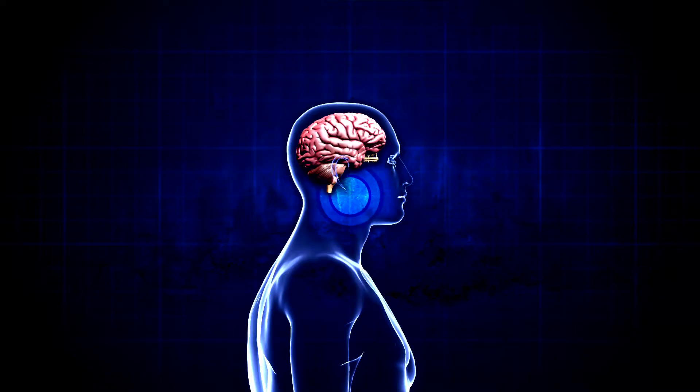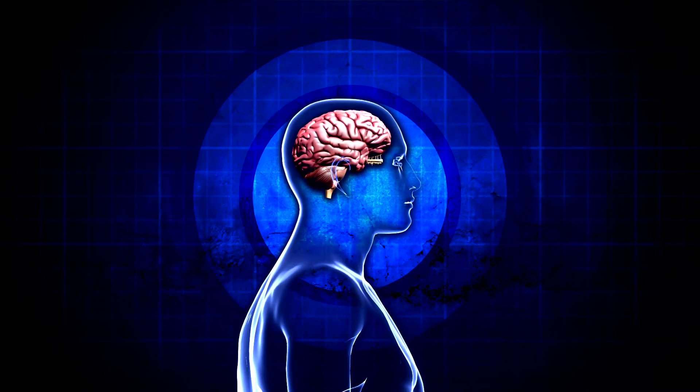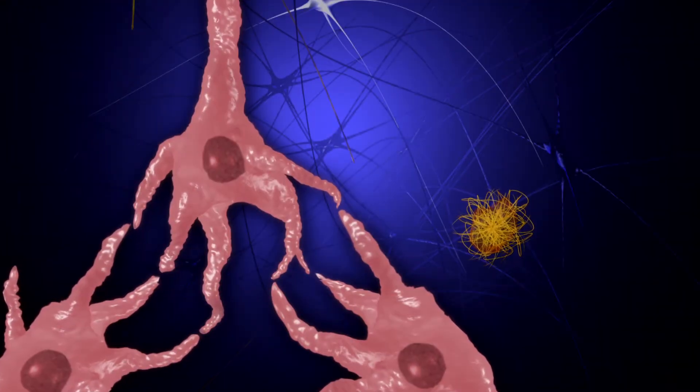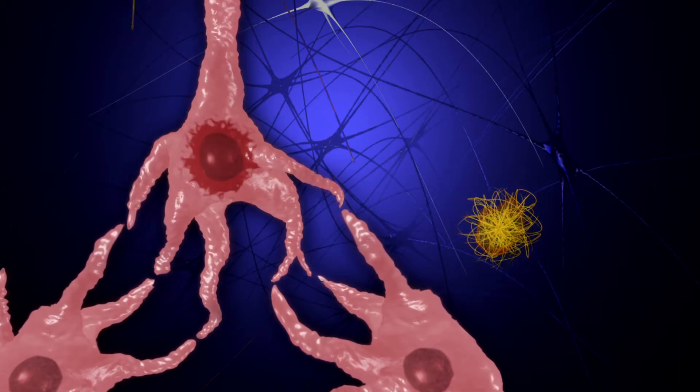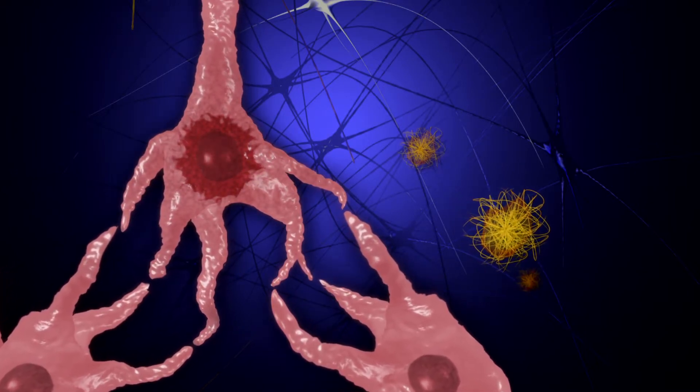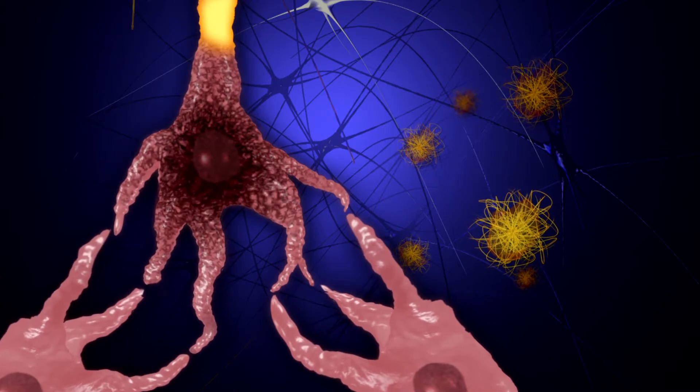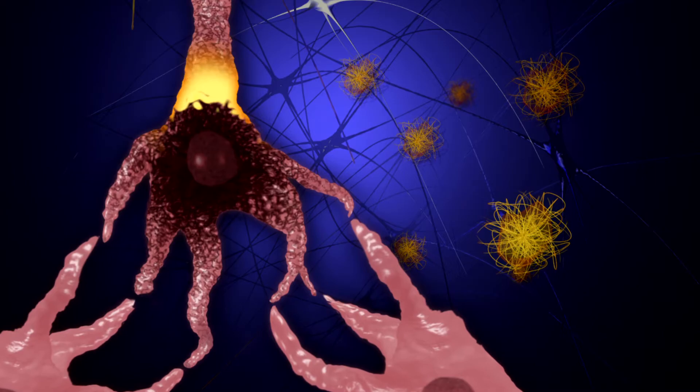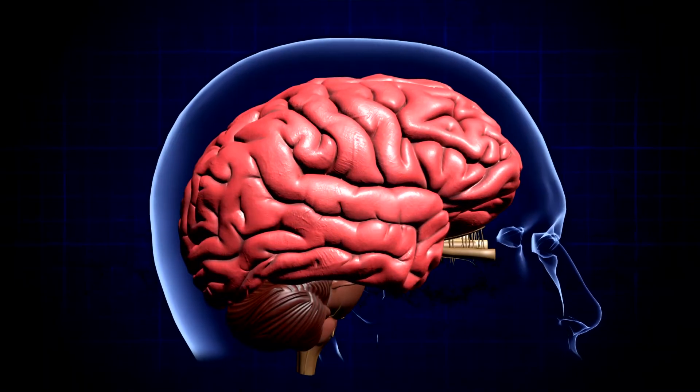To understand what France means by neuroprotective activity, let's take a look at what happens inside the brain of an Alzheimer's patient. Abnormal clusters of protein fragments called plaques and tangles build up inside and between nerve cells. Over time, the number of plaques and tangles increases, blocking information from traveling between nerves which ultimately kills the nerve cells.